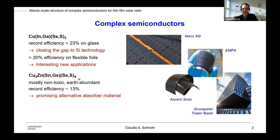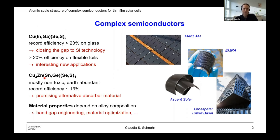You may kind of guess now why I call this a complex semiconductor. Up here we have five elements, down here it's already six — and on top of that, this is just the matrix elements; we also have doping and impurities. So there are really a large number of chemical elements present in these materials. This is also the reason why they are used so successfully in many fields of application, because you can choose — the material properties depend on the alloy composition.